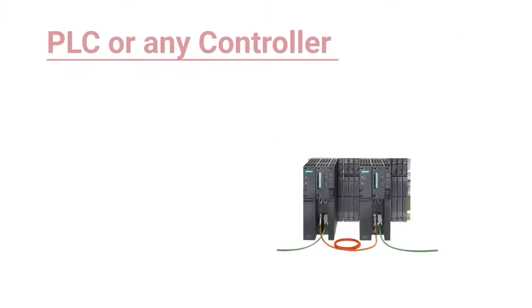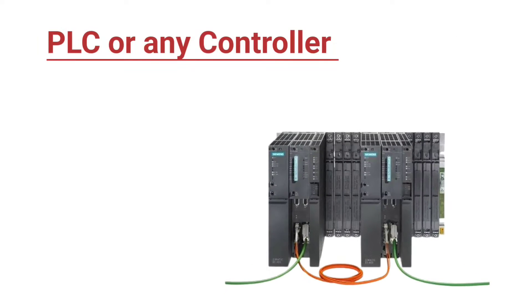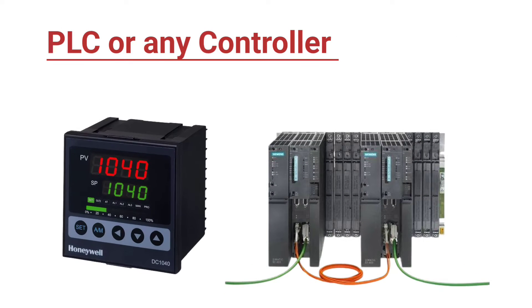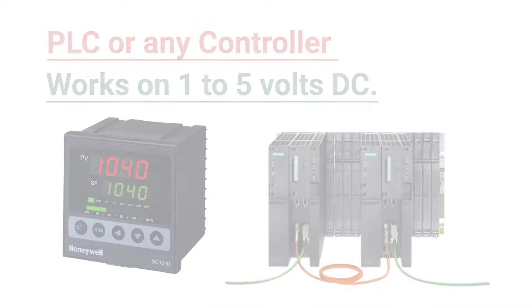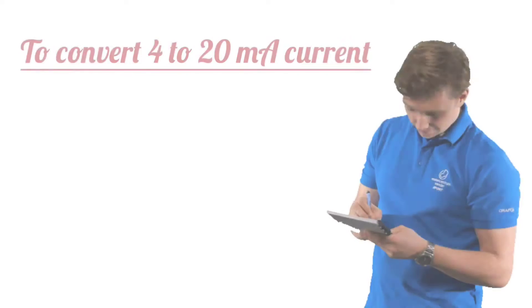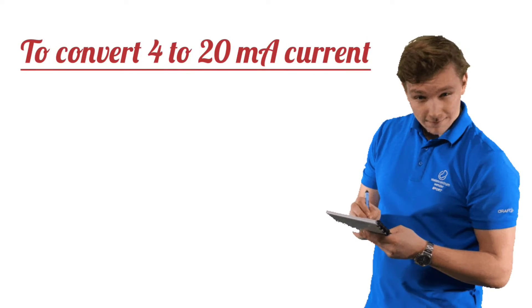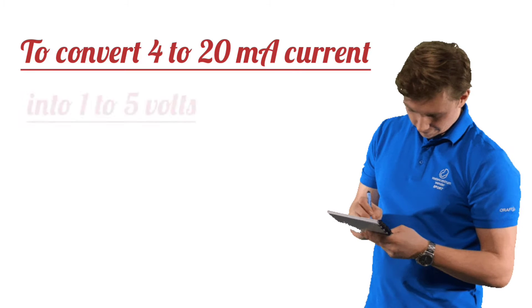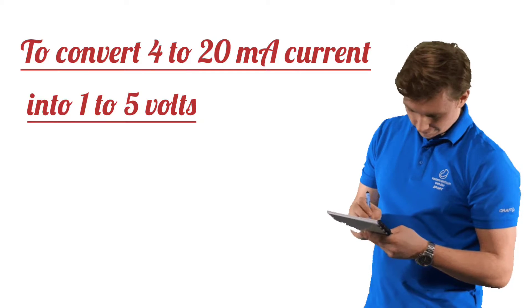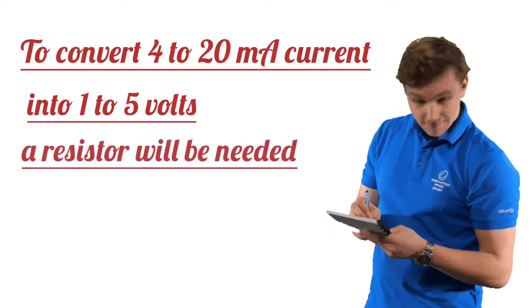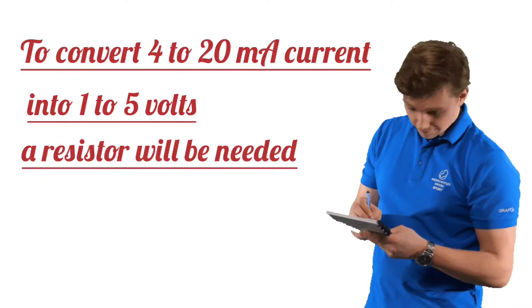A PLC or any controller works on 1 to 5 volts DC. Now to convert 4 to 20 mA current into 1 to 5 volts, a resistor will be needed.